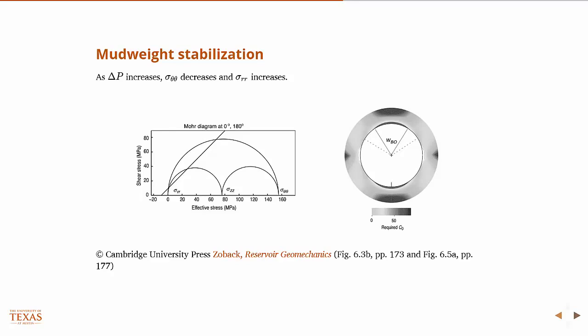So as delta P increases—which, remember, delta P is the pressure inside the well minus the pore pressure—if we can increase the pressure inside the well by increased mud weight, therefore increasing delta P,